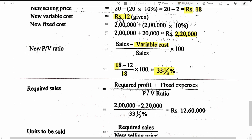Now with the help of the revised fixed cost, the new PV ratio, and the desired profit to be earned in 1987, we can calculate the required amount of sales. The formula is: (Required profit + Fixed cost) divided by PV ratio. Required profit is 2 lakh (same as 1986) plus new fixed cost 2 lakh 20,000, divided by new PV ratio 33.333%, giving us required sales of 12 lakh 60,000 rupees.